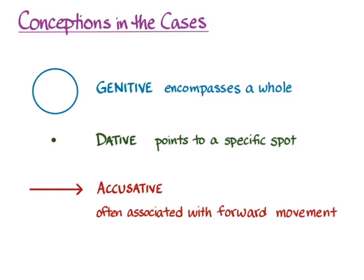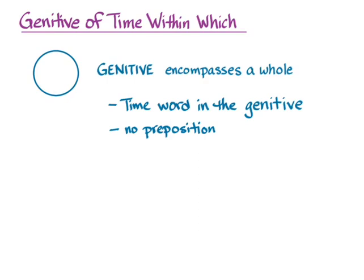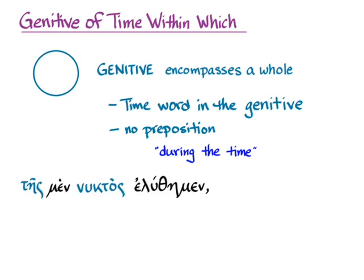Let's go to genitive of time within which. In Greek, when you want to talk about something that happens within a particular time, you give a time word in the genitive — day, night, hour, or any other word that encompasses a period of time — with no preposition. The default translation is 'during the time' or 'within the time.' So in 'tes men nuktos eleuthemen,' during the night we were freed, 'tes nuktos' is in the genitive — a time word without a preposition expressing the period of time within which we were freed.